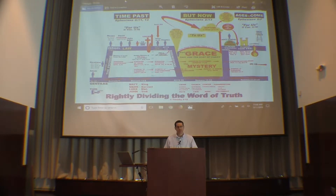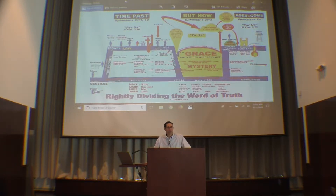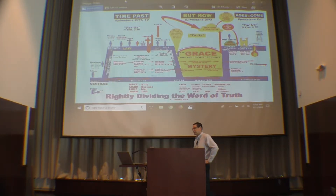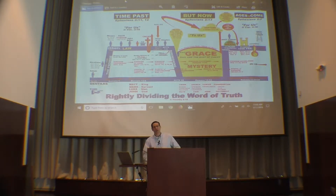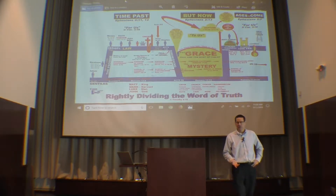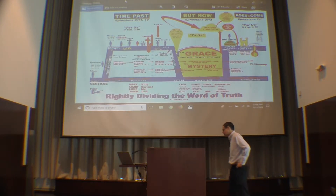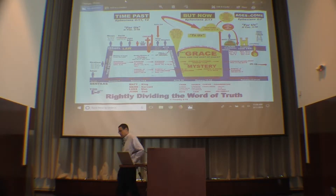Look at 2 Timothy chapter 2 verse 15: 'Study to show thyself approved unto God, a workman that needeth not to be ashamed, rightly dividing the word of truth.' So 2 Timothy commands us to study the Bible — it's the most explicit command in the Bible to study it. And notice what it does: it tells us how to study it. Rightly dividing the word of truth. If we're commanded to rightly divide it, then the Bible must have divisions in it. So the Bible has to have divisions, and we're going to look at what some of those are.